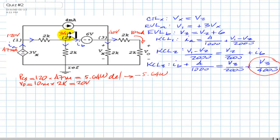V1 is 120. V2 is 34 volts. V3 is 40 volts. V0 is 20 volts. And the power in the control source in here is negative 5.64 watts. Thank you very much.